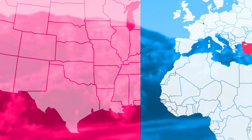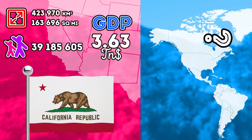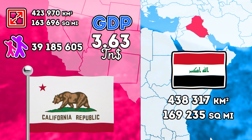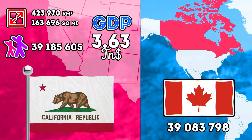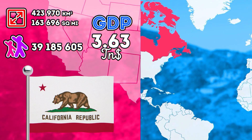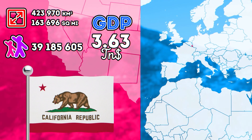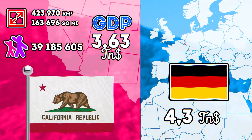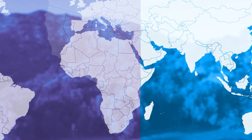It's time to go to the most economically developed and densely populated state – California. The area of this state is slightly smaller than the area of Iraq. As many people live in this state as in the whole of Canada. California has the highest GDP of any state in the US. If California were a separate, independent country, it would rank 5th in the world's nominal GDP, between Germany and India.